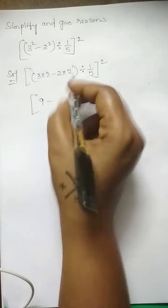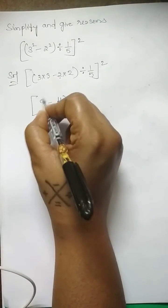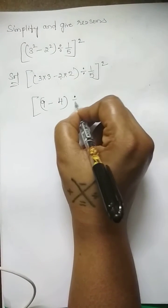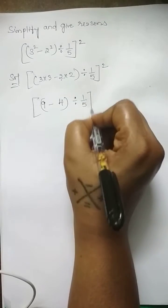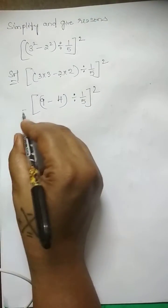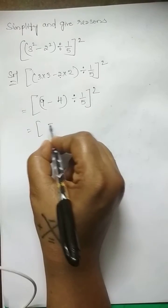Now 3 squared is nothing but 3 times 3 is 9 minus 2 times 2 is 4 divided by 1/5 whole squared. Now 9 minus 4 is 5.